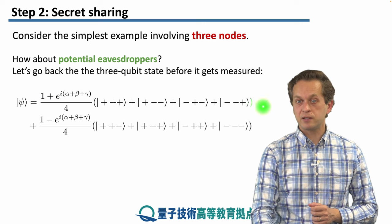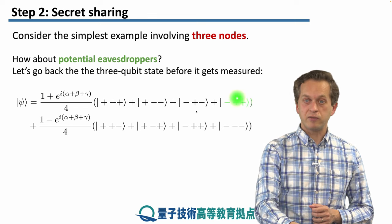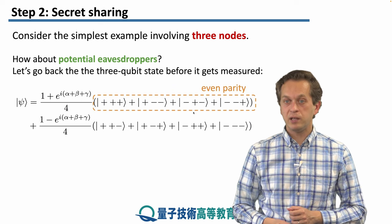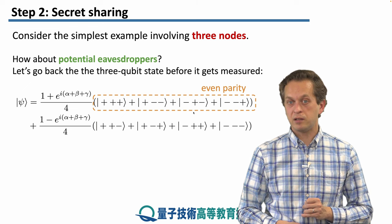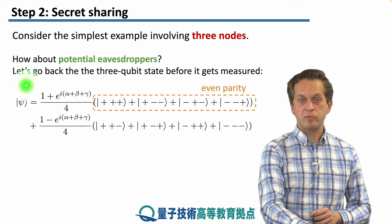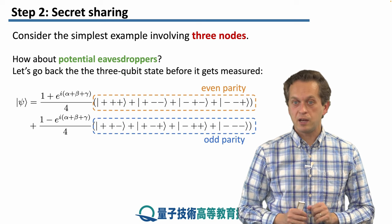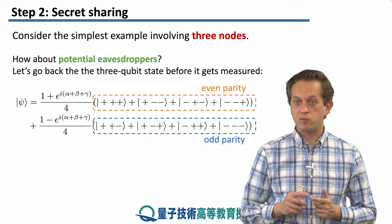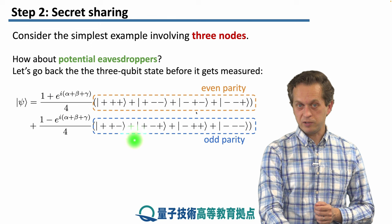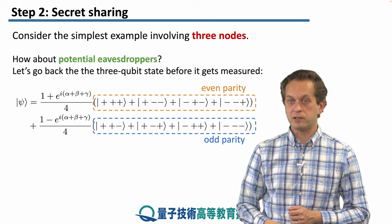So in here we have written the state in the Pauli x basis rather than in the computational basis. And we see that we have a group of terms at the top that have even parity, meaning they either have zero qubits in the state minus or exactly two qubits in the state minus. The bottom row of states has odd parity, meaning there is one or three qubits which are in the state minus.